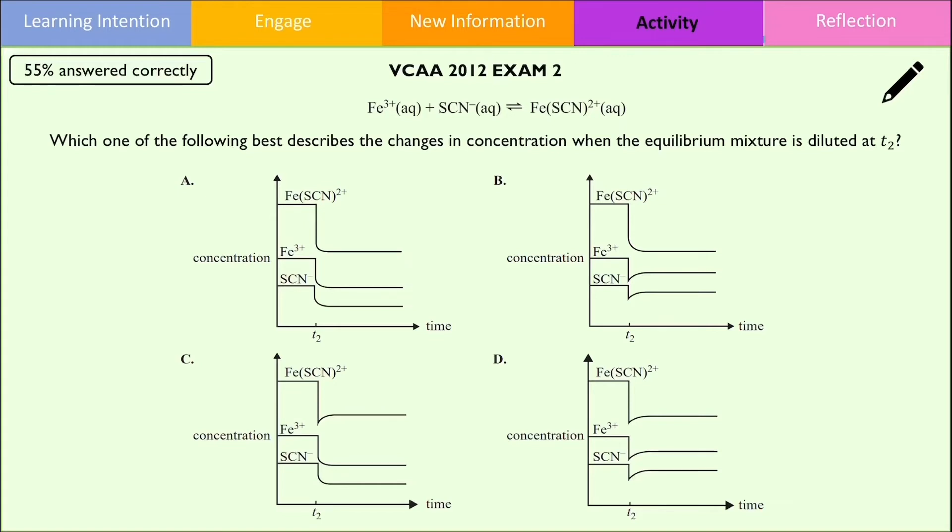In each of these options, they have all showed a sudden drop in concentration for both reactants and products which is correct. Because there are more dissolved ions on the reactants, we should expect equilibrium to shift to the left. Therefore, the concentration of the Fe3+ and the SCN- ion should slightly increase.